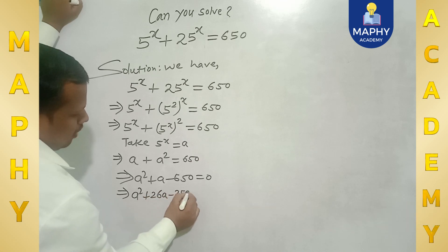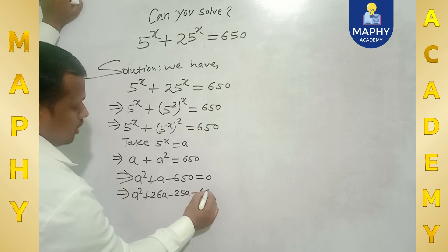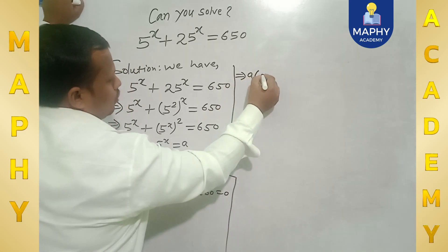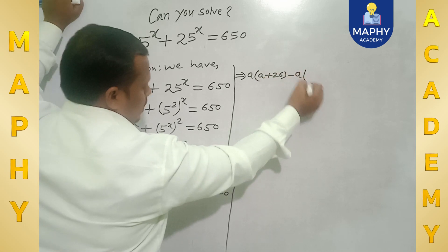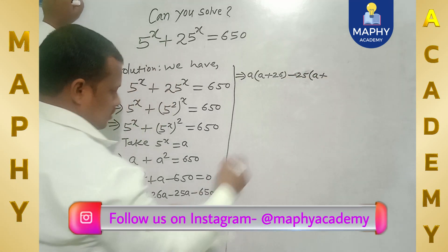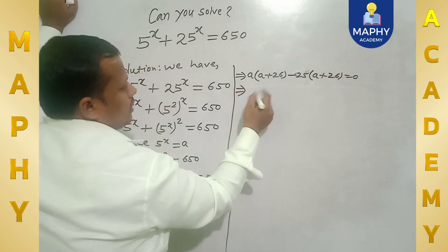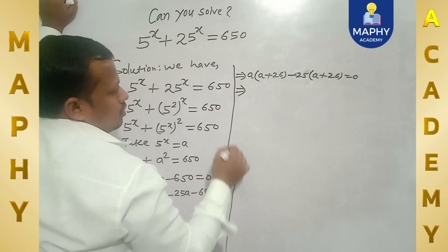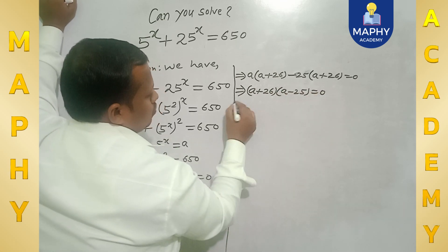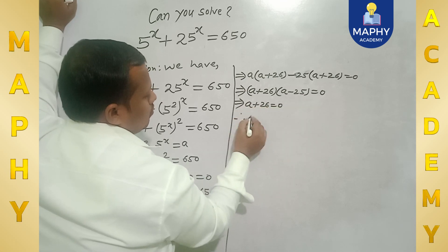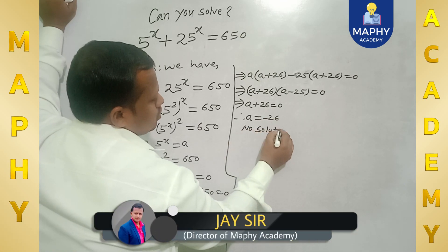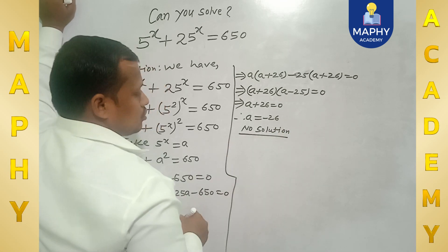a squared plus a minus 650 equals 0. This factors as (a + 26)(a - 25) = 0. So a = -26 or a = 25. Since a = 5 to the power x cannot be negative, a = -26 gives no solution.